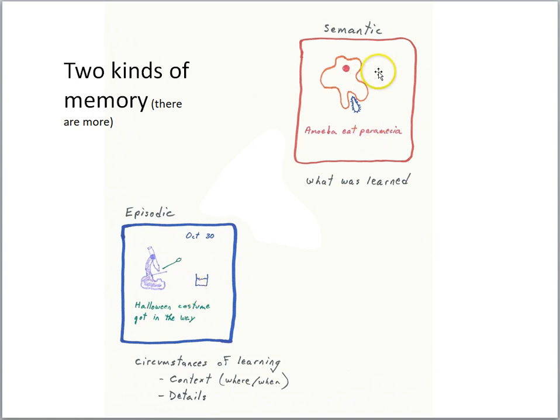On the other hand, a semantic memory for that learning episode might simply include what was learned. You might have observed an amoeba eating a paramecium, and so what we learned that day was amoeba eat paramecia.